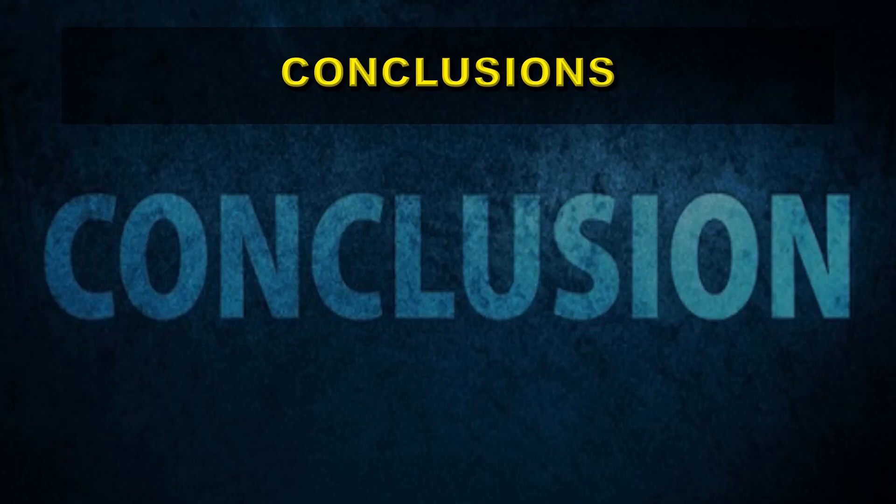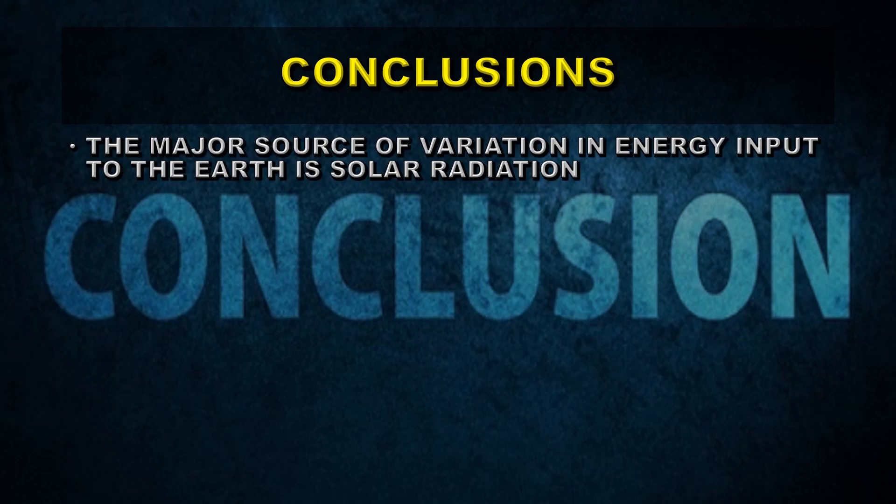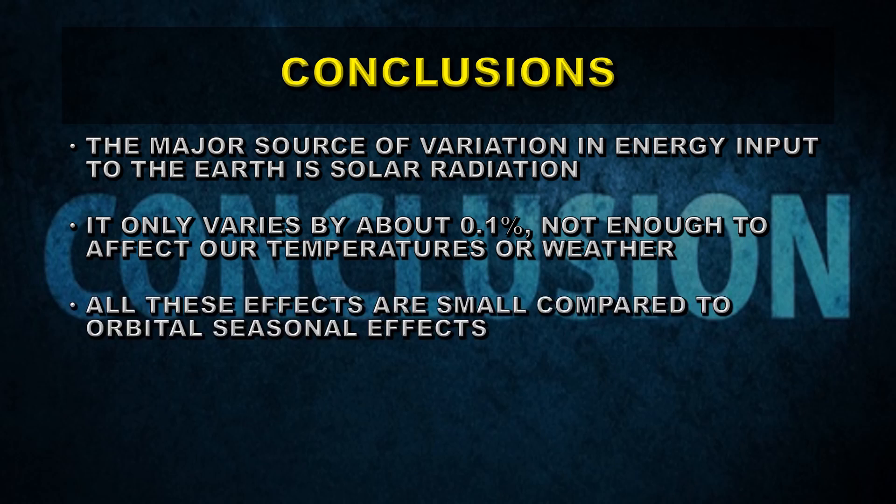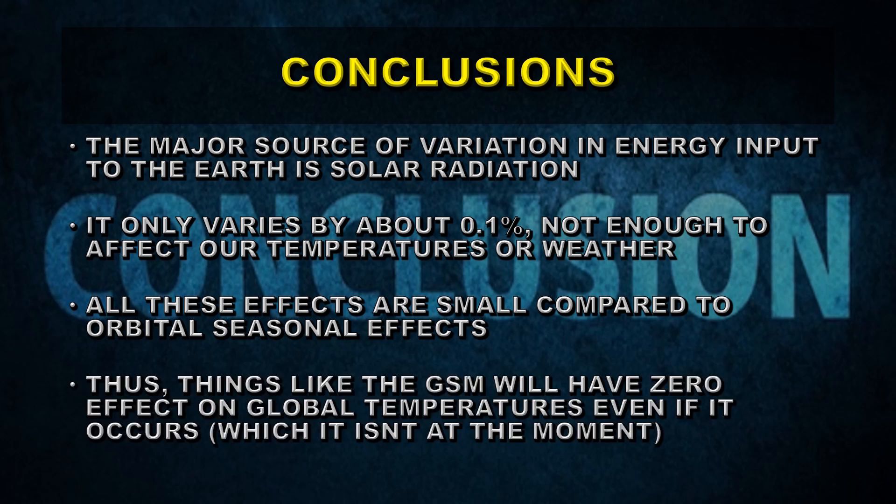So what can we conclude from all of this? A major source of variation in energy input from the sun is solar radiation. It only varies by 0.1 percent over an 11 year period and is not enough to affect our temperatures or weather. All these other effects are small by comparison to orbital and seasonal effects. Thus, things like the grand solar minimum will have zero effect on global temperatures, even if it occurs, which it isn't at the moment.